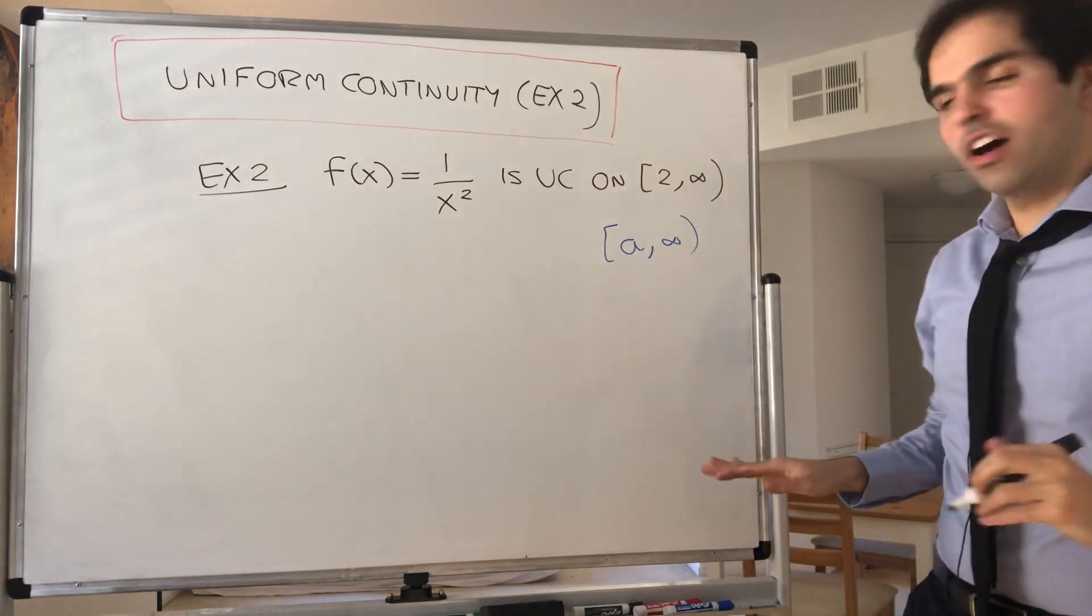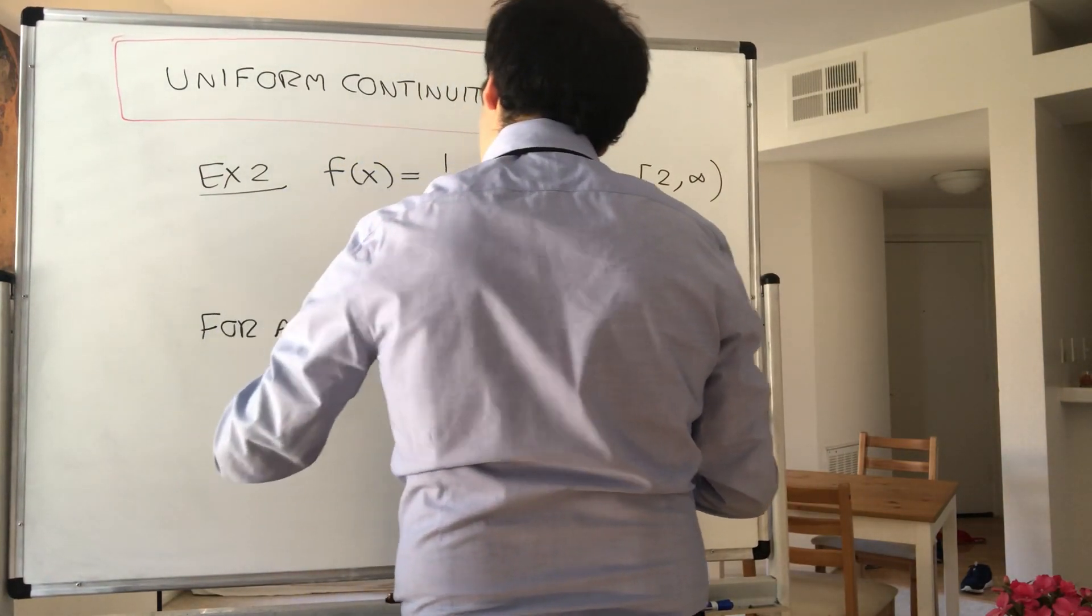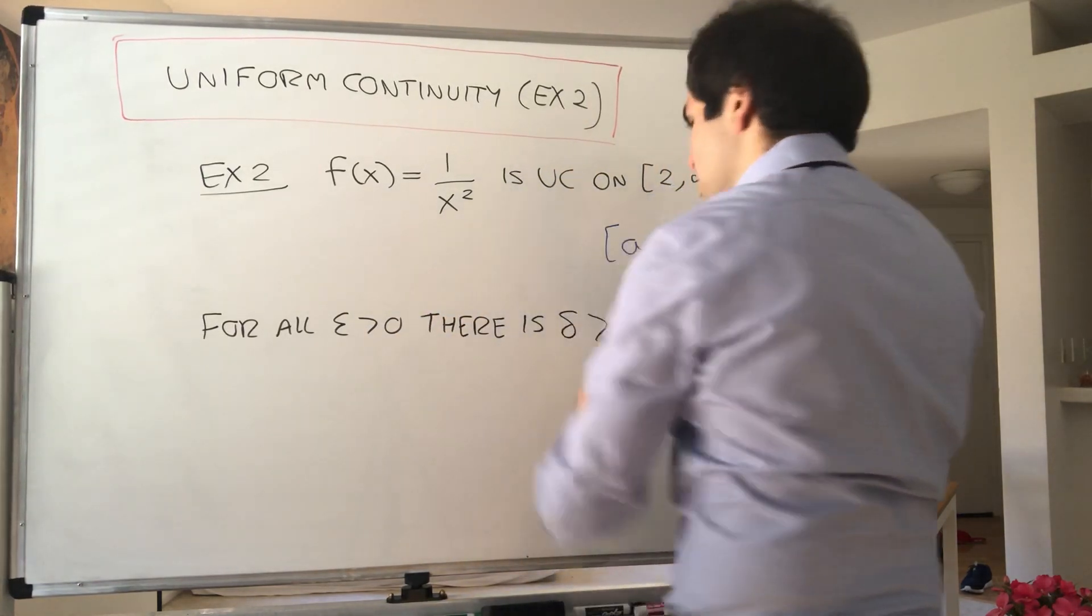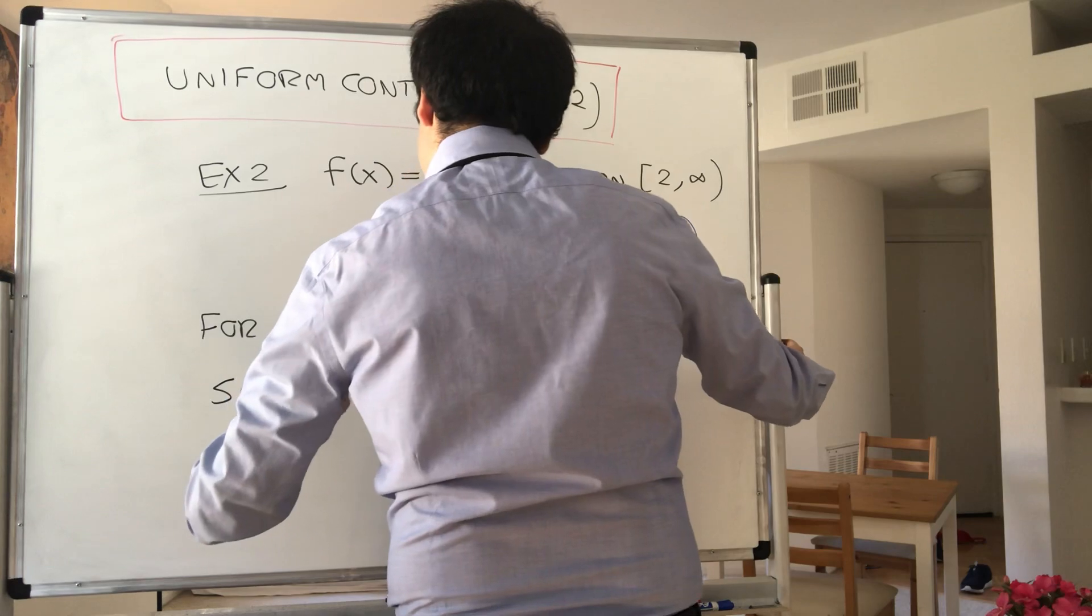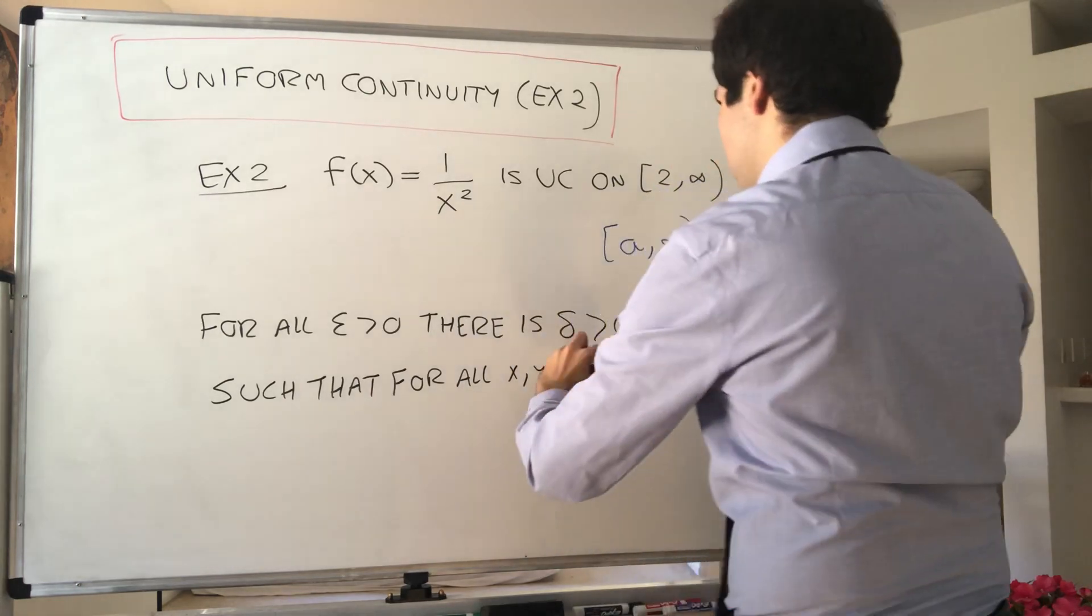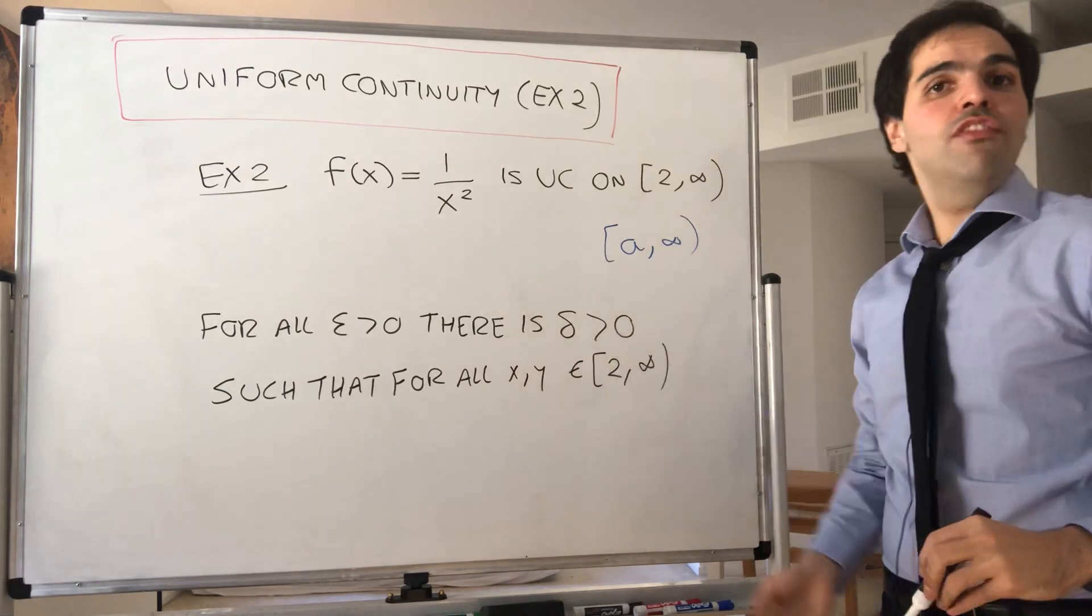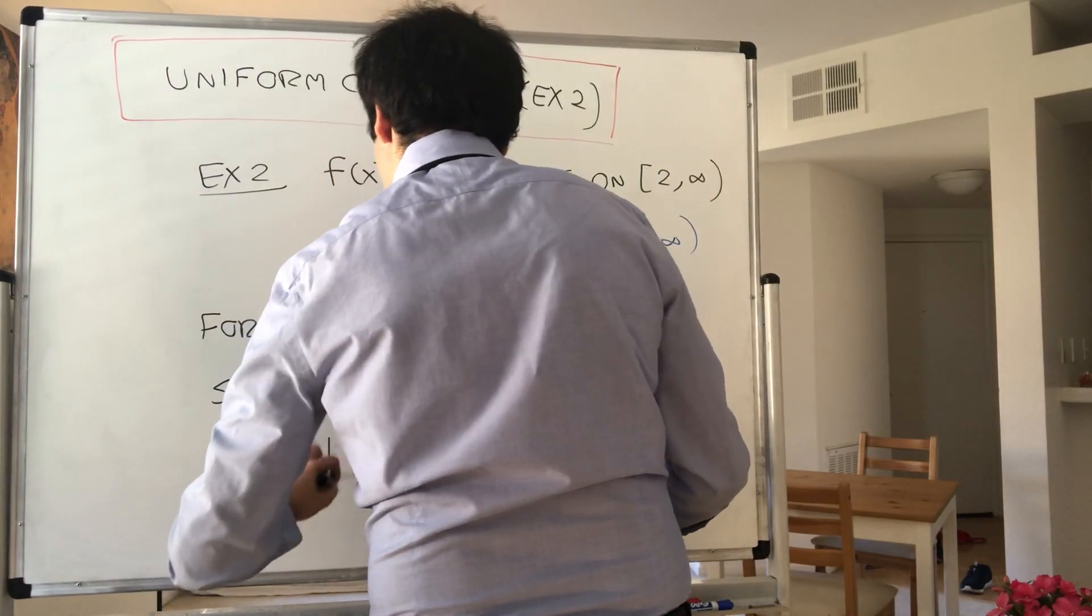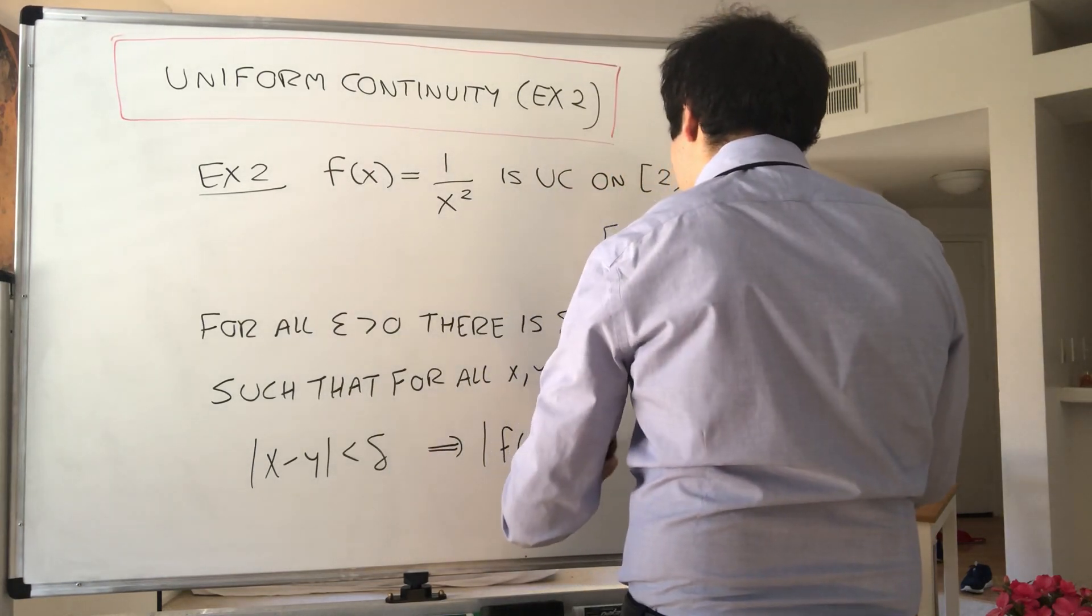What does uniform continuity mean? It means that for all epsilon, there is some delta, such that for all x and y in your interval, if x and y are close together, then f of x and f of y are epsilon close. So x minus y less than delta implies f of x minus f of y is less than epsilon.